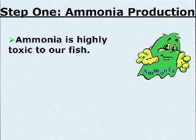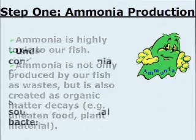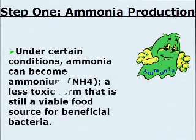Step 1: Ammonia Production. Ammonia is highly toxic to our fish. Ammonia is not only produced by our fish as waste, but is also created as organic matter decays — for example, uneaten food and plant material. Under certain conditions, ammonia can become ammonium, a less toxic form that is still a viable food source for beneficial bacteria.